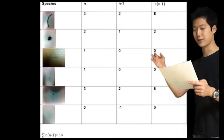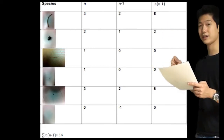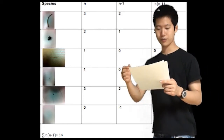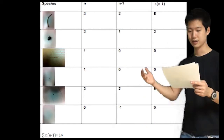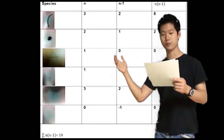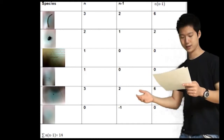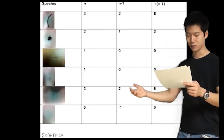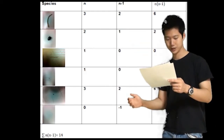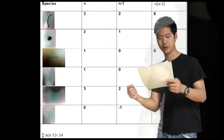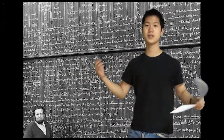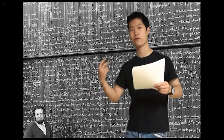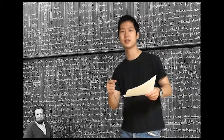I did that for all six species I found in my soil, then I added all the n times (n minus one) values. That gave me 14. The total number of organisms I had in the soil with 1.8% H₂O moisture was 10, and N minus one is nine. So I multiplied that to get 90. So 14 over 90 equals 0.156. Now, subtract 0.156 from 1, and you get 0.844. This is your Simpson's Diversity Index.